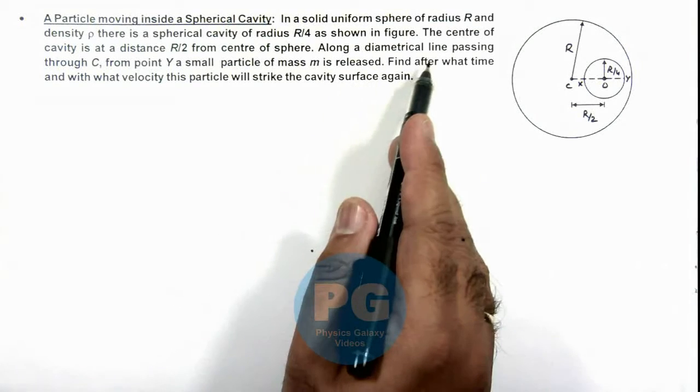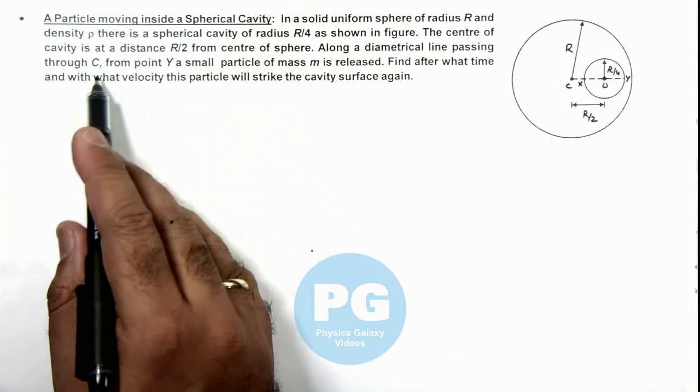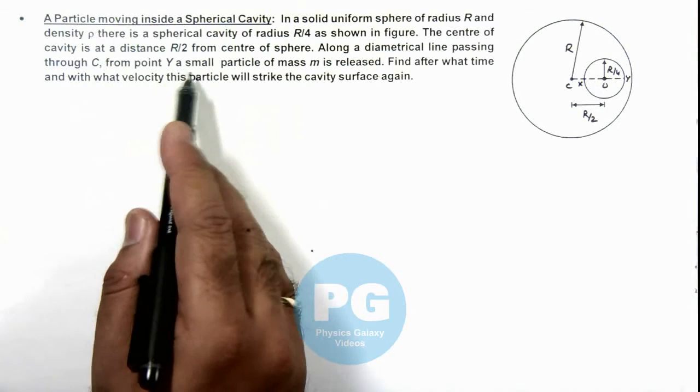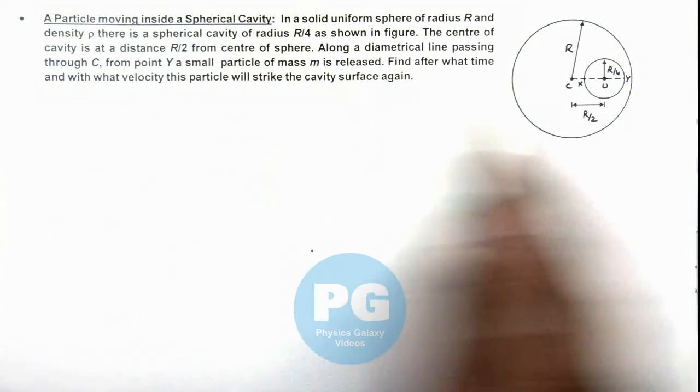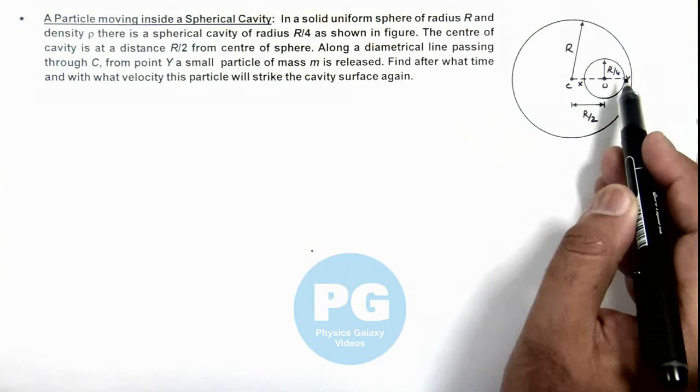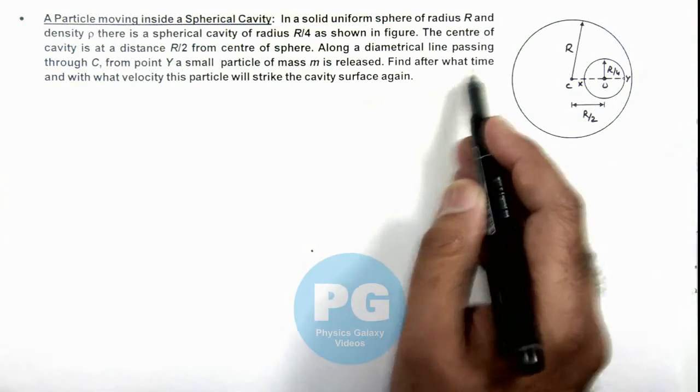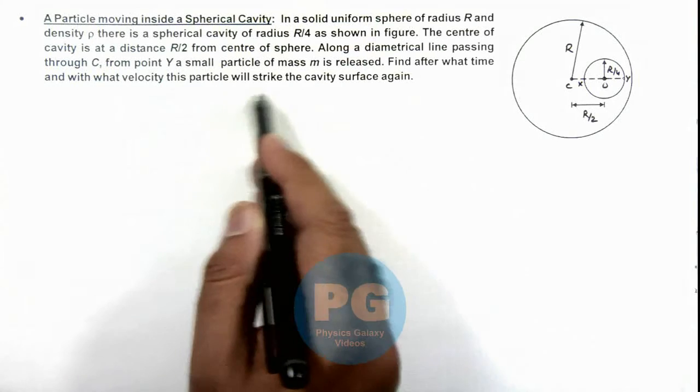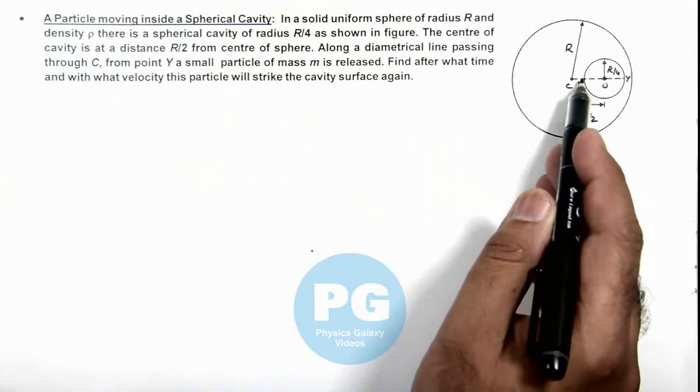Along the diametrical line passing through point C, from point Y a small particle of mass m is released. We are required to find after what time and with what velocity this particle will strike the cavity surface again.